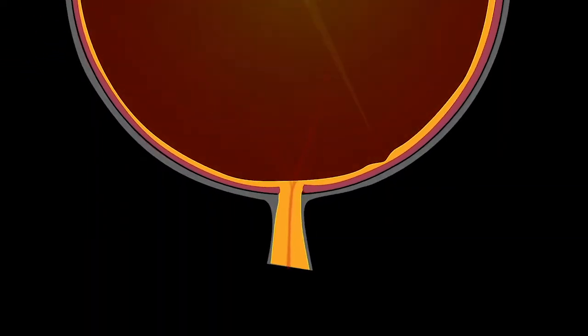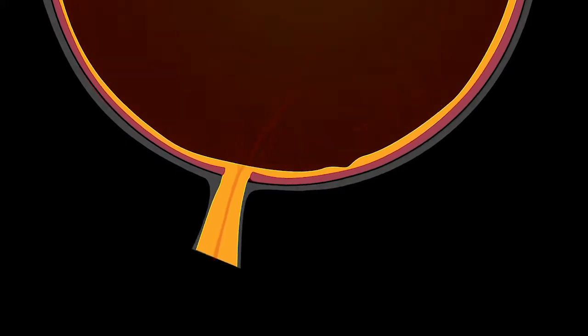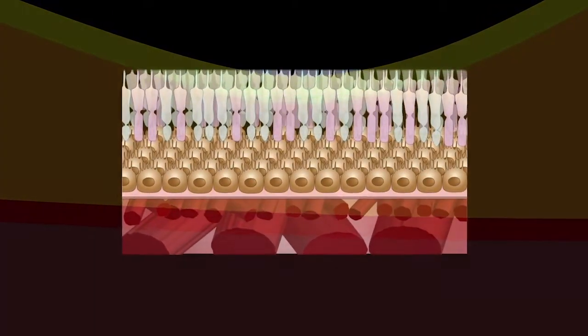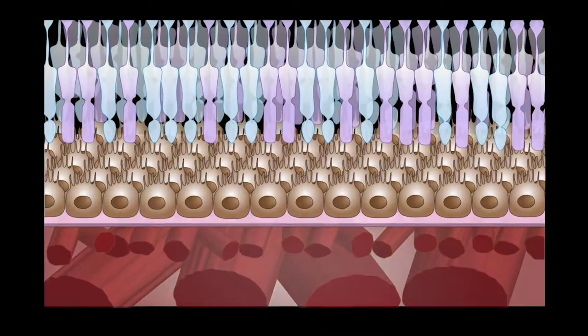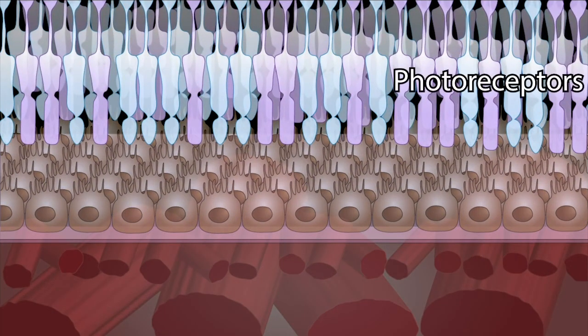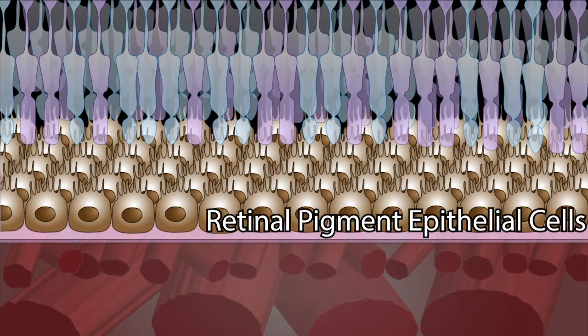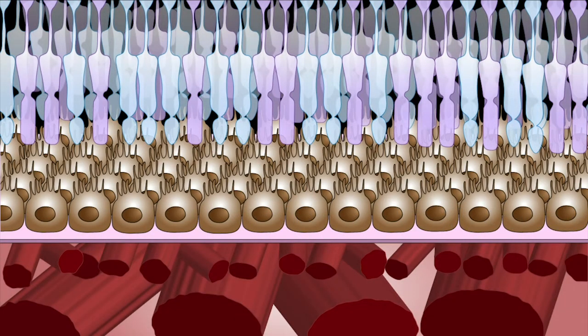When light enters the eye, it gets focused down to the back of the eye on a thin layer of tissue called the retina, where it gets detected by a specialized neuron called the photoreceptor. These photoreceptors don't exist all by themselves, but require the nourishment of a surrounding cell called the retinal pigment epithelial cell, or RPE.